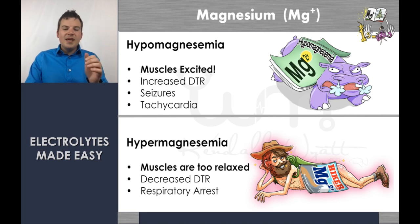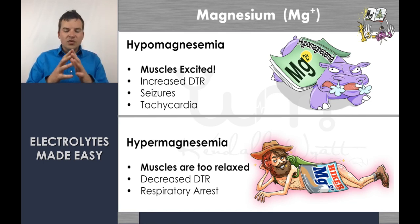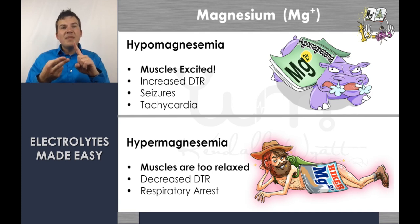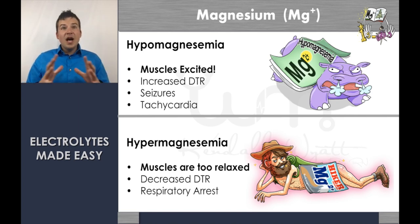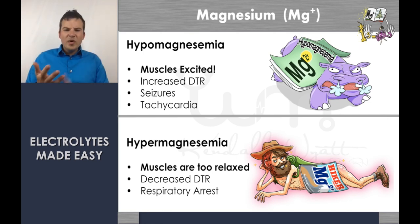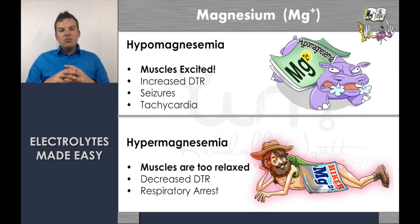With too much magnesium — hypermagnesemia — the muscles are way too relaxed. Signs and symptoms include decreased or absent deep tendon reflexes (the biggest one), respiratory depression because of the diaphragm's muscle, muscle weakness, and bradycardia. All the muscles are slowed down and relaxed. Conversely, with too little magnesium — hypomagnesemia — muscles get easily excited: you see twitching, tremors, increased deep tendon reflexes, seizures, and tachycardia. The two are exact opposites.